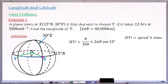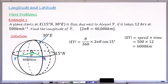The same distance from X to Y can also be calculated using distance = speed × time. So 500 km/h multiplied by 12 hours gives a total distance of 6000 kilometers. This means the length of arc XY is 6000 kilometers. I can now substitute this into the arc length formula to solve for theta.